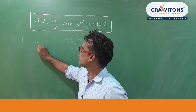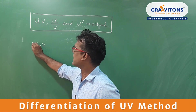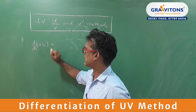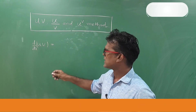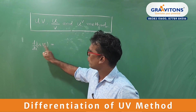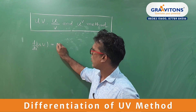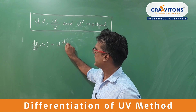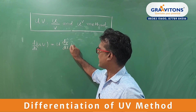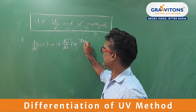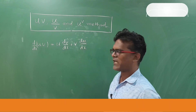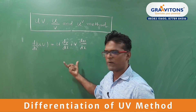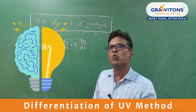First we have the UV method. When we are differentiating two functions in multiplication, we have to keep any one of them outside and differentiate the other one. For example: u into dv by dx, plus v times du by dx. It may be difficult to remember as a formula, but I will explain one situation.